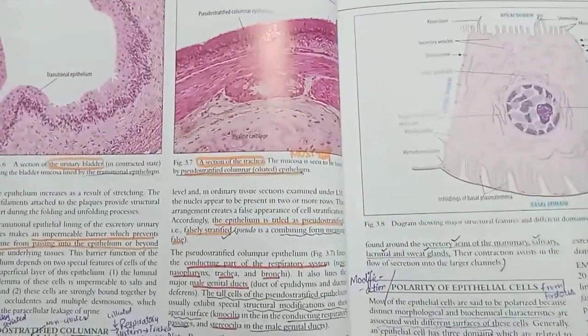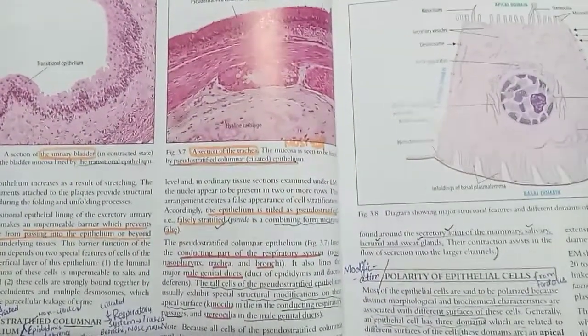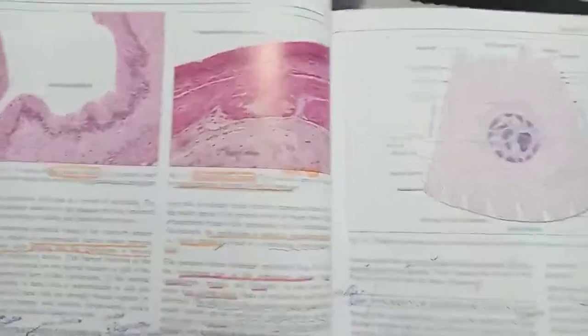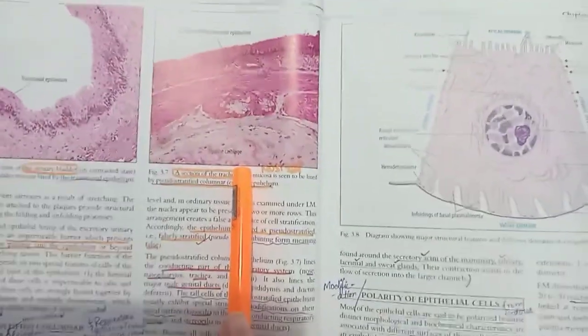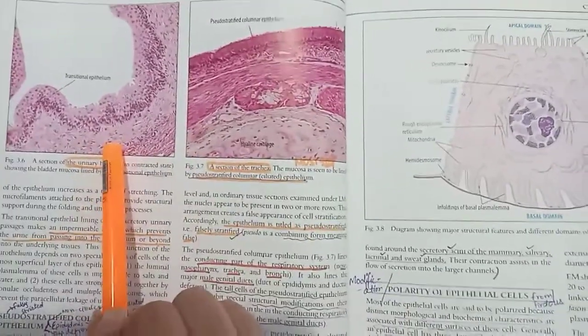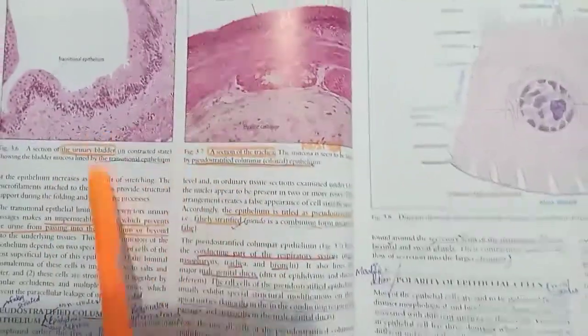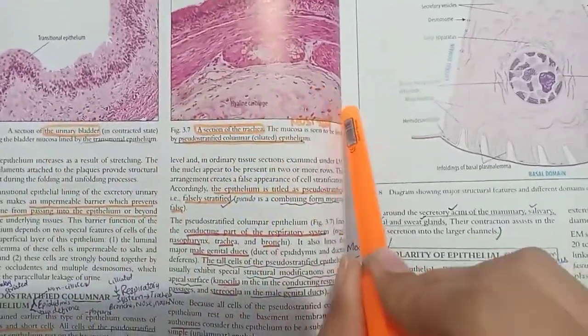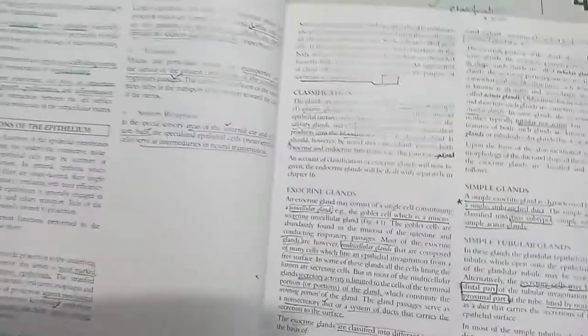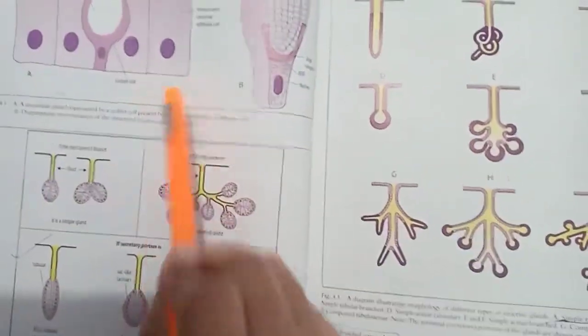This is a very important diagram. You can follow the diagram. This is stratified squamous epithelium, transitional epithelium, with examples. After that, these are the domains, these are the epitheliums which are important. After that, you can see the glands.